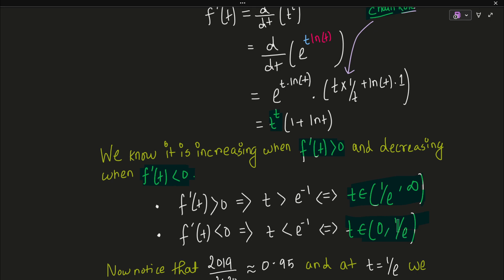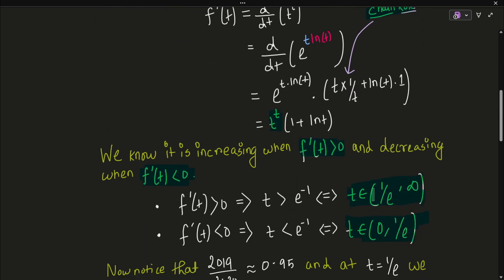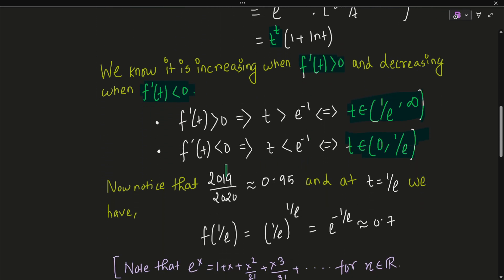So f(t) = t^t first decreases continuously from 0 to 1/e, then increases from 1/e onwards all the way to infinity, since the limit at infinity is infinity. The function starts at t = 0 with value 1, decreases to a minimum at t = 1/e, and then increases back to infinity. Note that 2019/2020 ≈ 0.95.